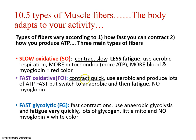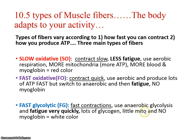Fast oxidative contracts quickly, still uses aerobic respiration and produces lots of ATP, but switches to anaerobic at some point because of speed and ATP demand — at which point it will fatigue. It doesn't have myoglobin, so these tend to be white meat. Fast glycolytic also has fast contractions, uses anaerobic glycolysis throughout, fatigues very quickly, has lots of glycogen supplying glucose for continued glycolysis, doesn't have much mitochondria, and also has no myoglobin — also white meat.